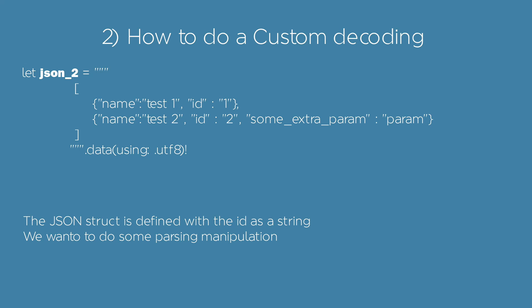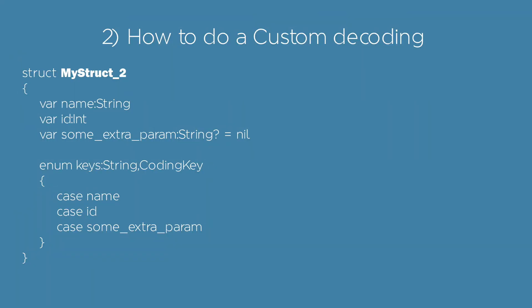Let's see now how to do a custom decoding. We have a JSON object in which the id is defined as a string. Moreover, we want to fill some optional parameters in the case they are nil. Let's define a struct — it's the same as before. However, since we want to do a custom decoding operation, we'll have to define the object keys with the CodingKey feature.